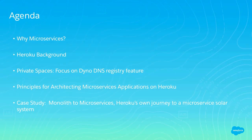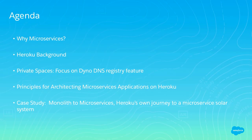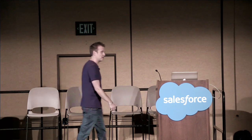Here's the agenda. We're going to talk about why microservices — what good are they? Then we'll do some background on Heroku, cover private spaces with a focus on the Dyno DNS registry, which enables more architectural options. We'll cover general principles for architecting microservices on Heroku, and go through a case study — Heroku's own journey from monolith to what I call a microservices solar system.